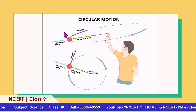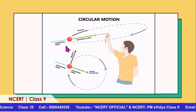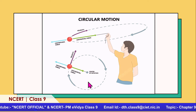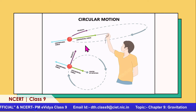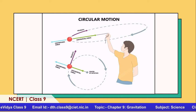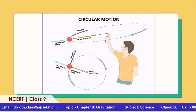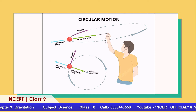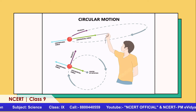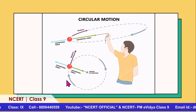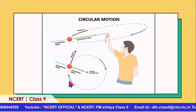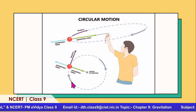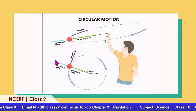If you release the thread, the stone will go along a straight line — the tangent to the circle. When it is released, the thread flies off tangentially from the point on the circle. To balance this, there is a force called centrifugal force. Centripetal force acts toward the center and centrifugal force acts away from the center — centripetal force is balanced by the centrifugal force.